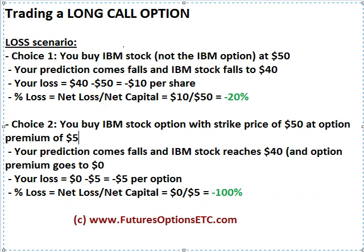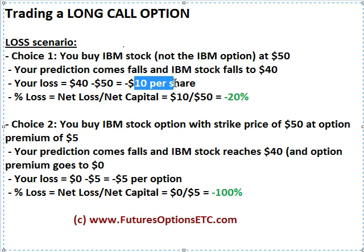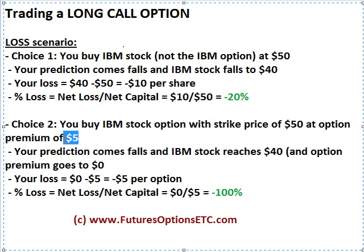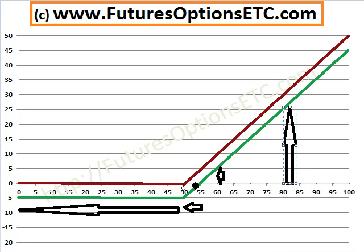How do we consider this theoretically in terms of the loss scenario? Suppose that you buy IBM stock — not the IBM option — and your prediction comes incorrect and IBM stock falls. So you book your losses, and your percentage loss is only 20%. But in the case of going with the IBM stock option, by paying the premium of $5, you are actually losing that entire premium because your profit would be zero — so your loss will be 100%. If the IBM stock price remains below the strike, you are going to lose the entire option premium, a 100% loss. But if your prediction comes true and IBM stock price keeps moving upwards, the profit potential is huge.